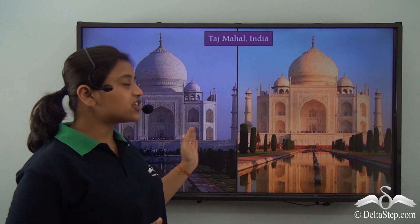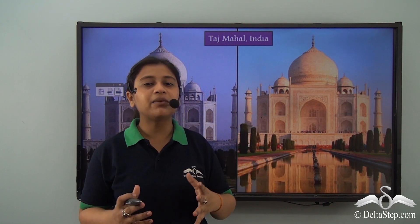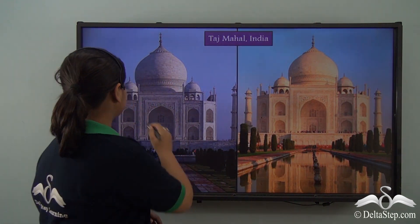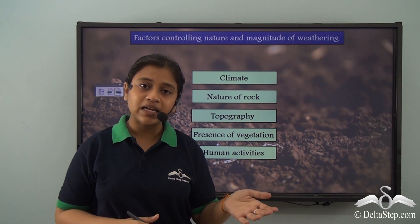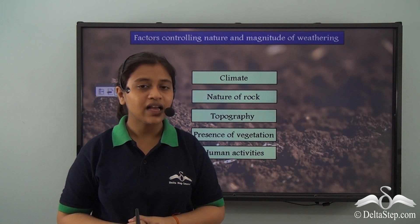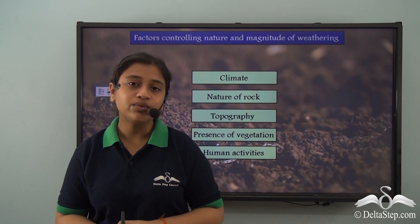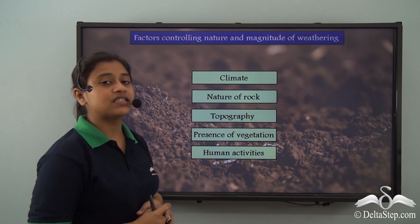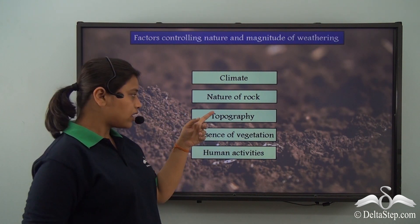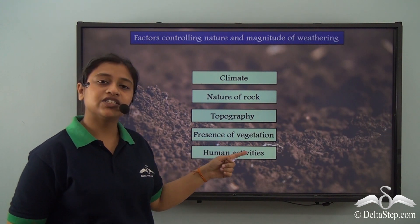The change in colour of the Taj Mahal is simply because of agents of chemical weathering. There are four processes that help in chemical weathering: carbonation, solution, hydrolysis and oxidation. Now that we have covered all three types of weathering — biological, mechanical and chemical — let's learn the factors that influence the magnitude and nature of weathering. The factors are climate, nature of rock, topography, presence of vegetation and human activities.